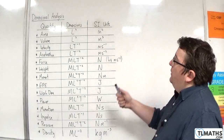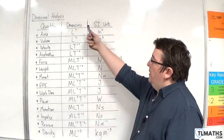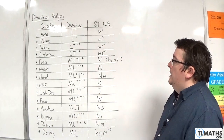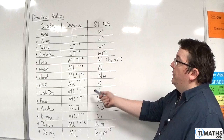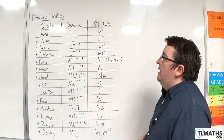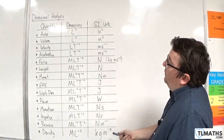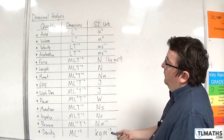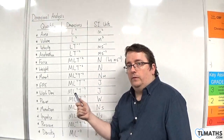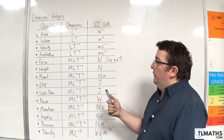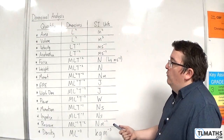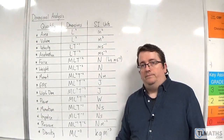That is how we can find the dimensions of each of these quantities. Some of them you can work out immediately; for others, go back to the SI units first and then find the dimensions. Sometimes it's easier that way rather than memorising them all.